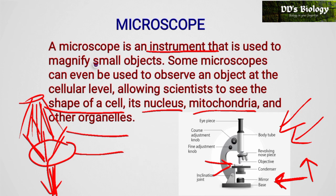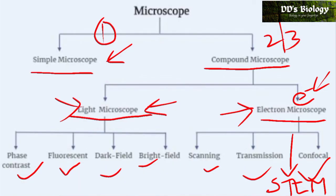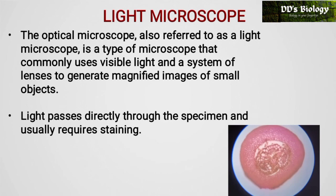When the specimen is bright, we can magnify it. This is the normal mechanism of the compound microscope. The optical microscope is also referred to as a light microscope. It uses visible light and a system of lenses to generate a magnified image of a small object.